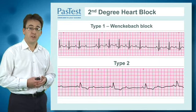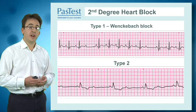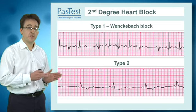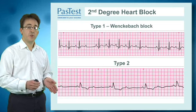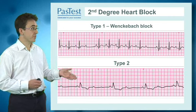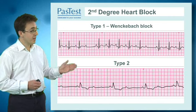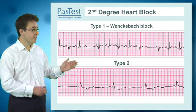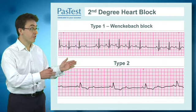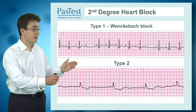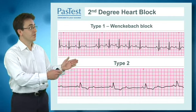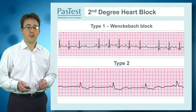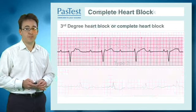Type 2, however, is where you have an alternating pattern of a conducted beat with a non-conducted beat. So you see on the screen here a P-wave followed by a QRS complex, then just a P-wave with no QRS complex, and then the next beat is a P-wave with a QRS complex. This is a repeating pattern throughout the whole trace.